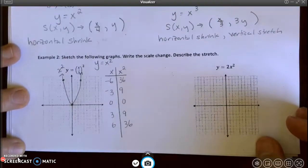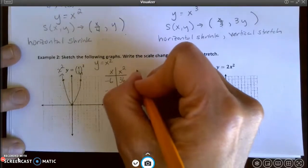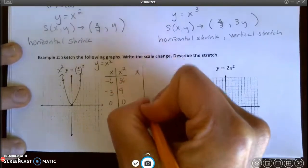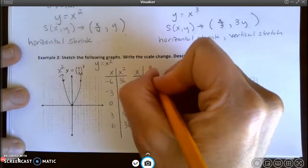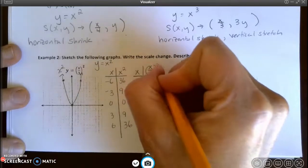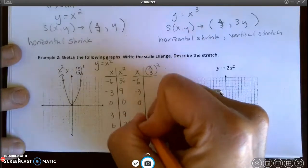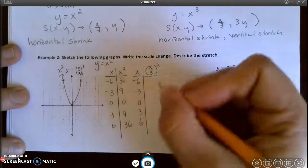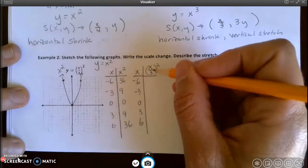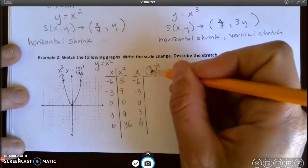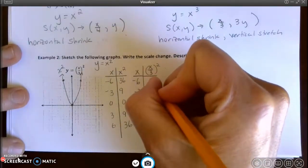And then what I'm going to do is, I'm going to do a table that is x and the image, or the scale changed function, x divided by 3 squared. And I'm going to use the same points. Now you can probably see why I chose these numbers, because I wanted numbers that were going to be divisible by 3. So when I divide negative 6 by 3, I get negative 2. When I square negative 2, I get positive 4.